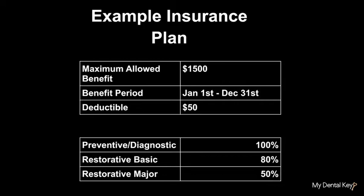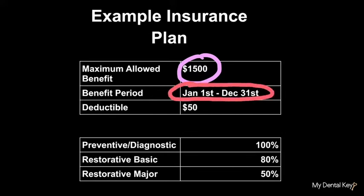Here, we see a pretty standard insurance plan. This number is the maximum allowed benefit. A maximum allowed benefit is the maximum amount that the insurance company will pay for the patient's treatment during that benefit period, which is stated here. Next, we'll look at the deductible.